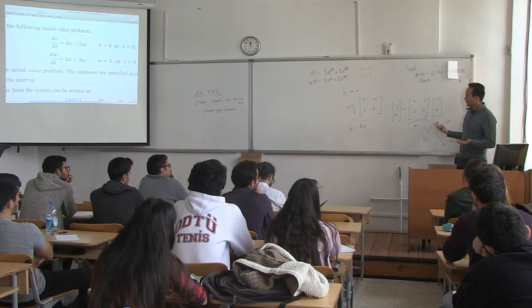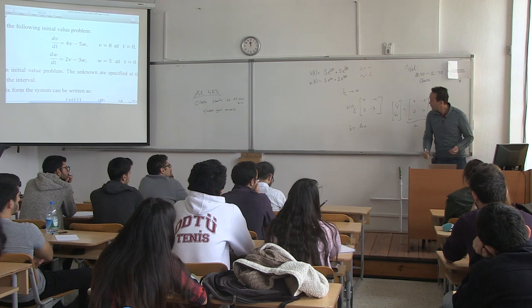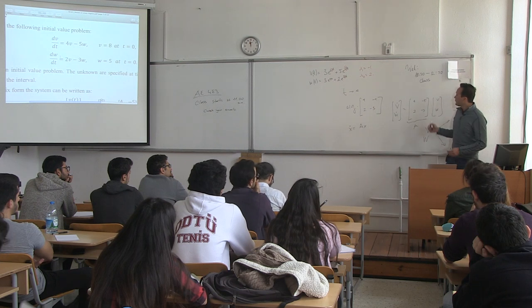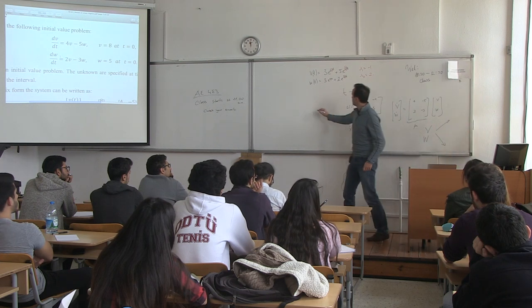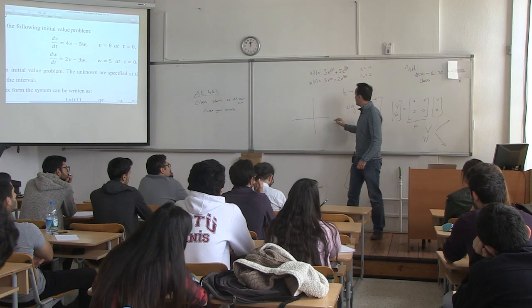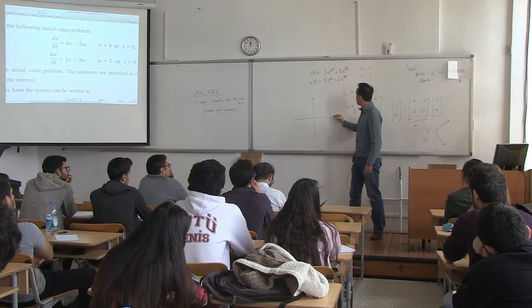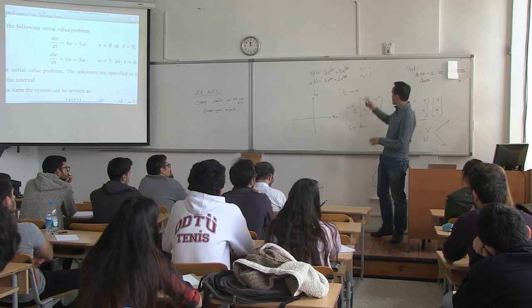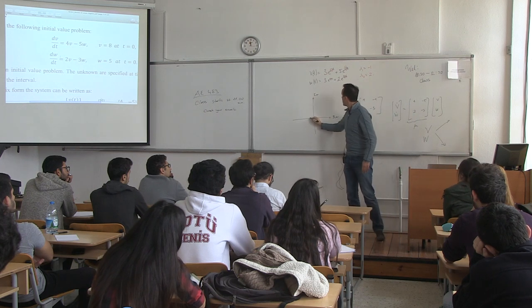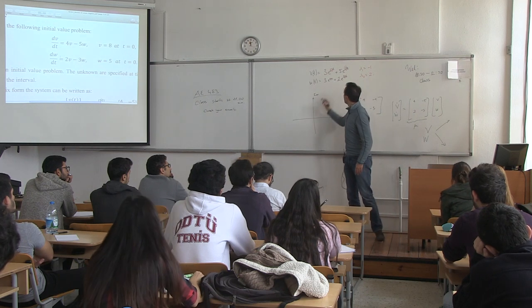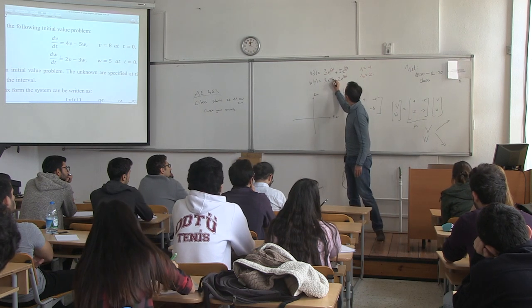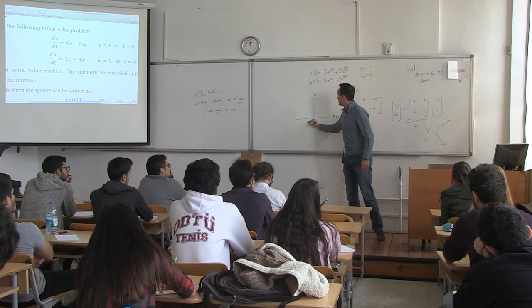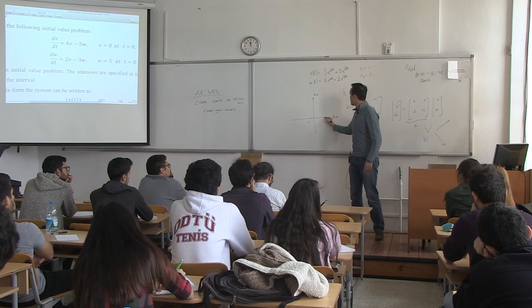What we usually do is plot these eigenvalues on the complex plane — this is the real axis and this is the imaginary axis. For this example, one eigenvalue is at minus 1 and the other one is at plus 2.